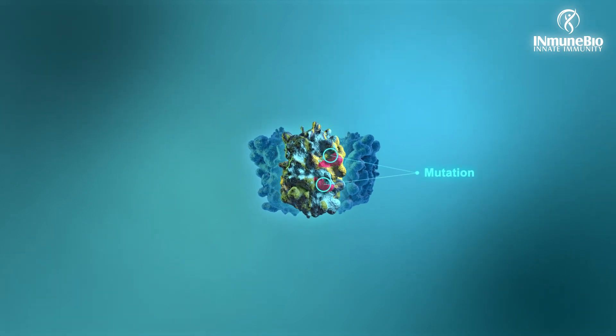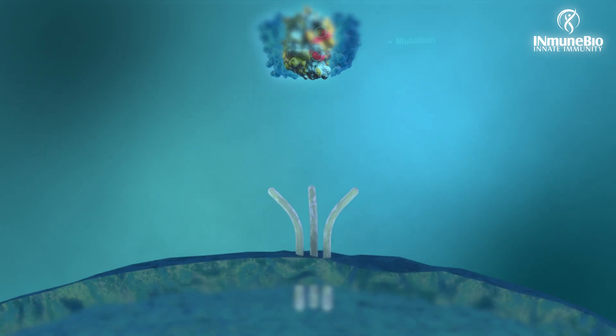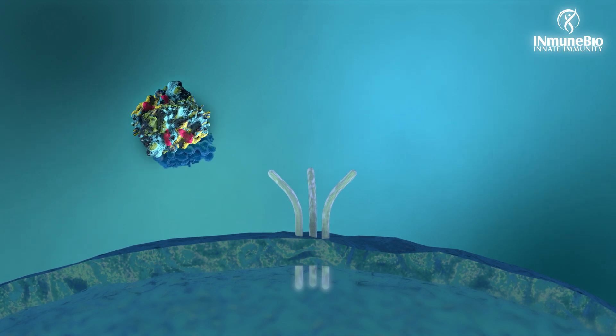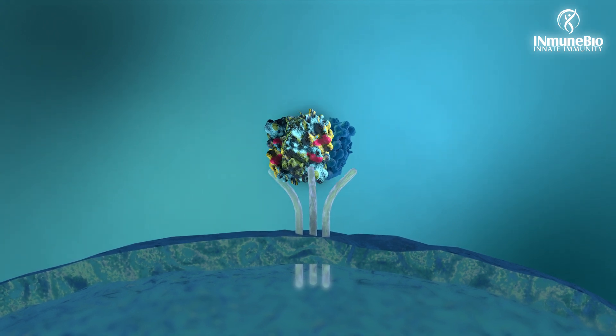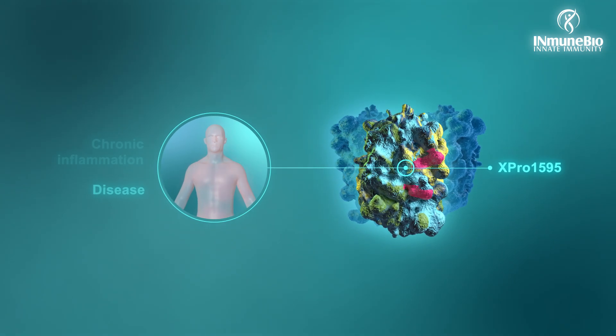However, X-PRO-1595 has a mutation in the receptor-binding domain, which prevents trimers containing X-PRO-1595 and native soluble TNF from binding to TNF receptors. This stops chronic inflammation.